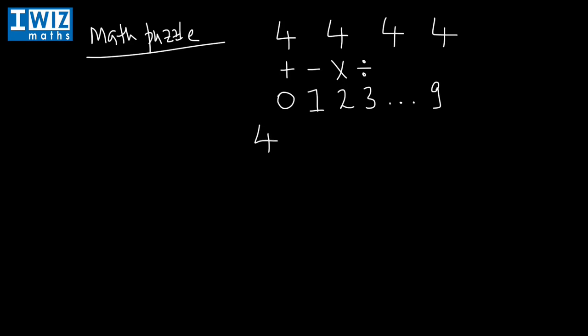We have four fours — four, four, four, and four — and we're expected to get to zero. We can do that by saying four minus four, which is zero, plus four minus four, which is also zero. So zero plus zero is simply zero.